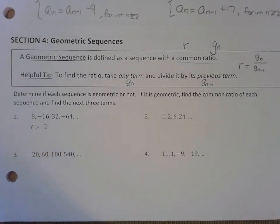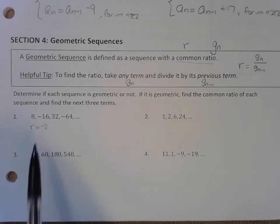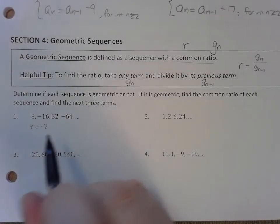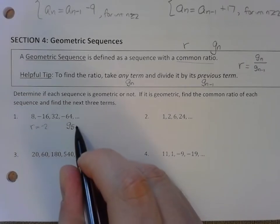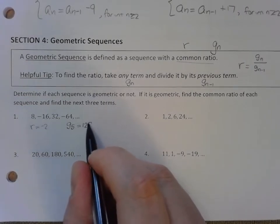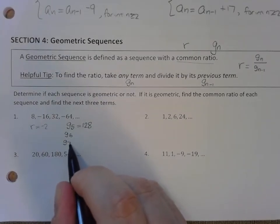Then it says find the next three terms. All I need to do is multiply negative 64 by negative 2 to come up with our next term: 1, 2, 3, 4. So our fifth geometric term would be positive 128. I almost said negative.